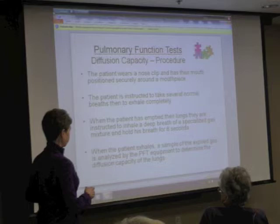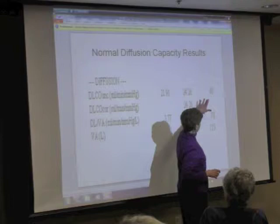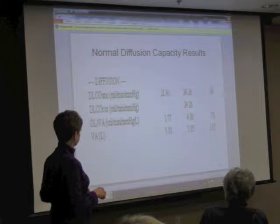My diffusion capacity was 21.91, which is 90% of predicted. You don't have to be 100% to be normal — anything above 81% is considered normal. So my diffusion capacity was normal.